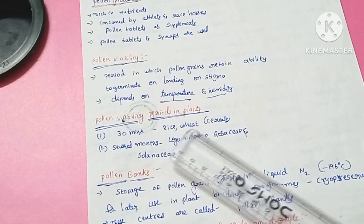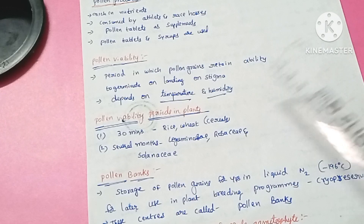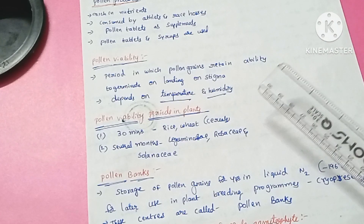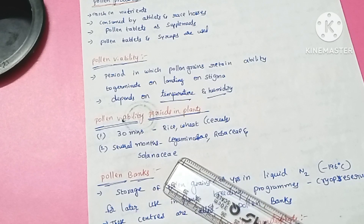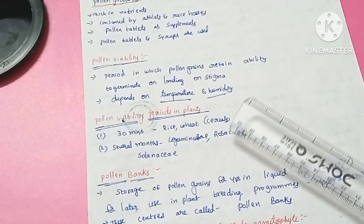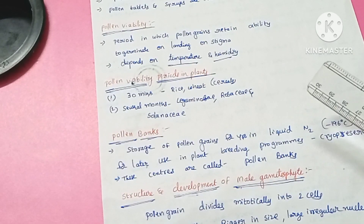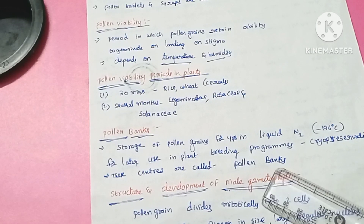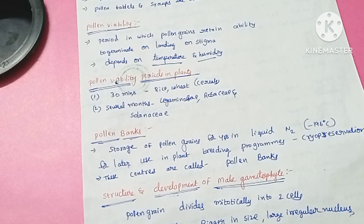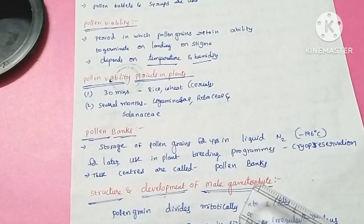In cereal plants like rice and wheat, pollen grains are viable for only about 30 minutes. In some other plants like Leguminaceae, Rosaceae, and Solanaceae, viability may differ. In plant breeding techniques, pollen grains are stored in liquid nitrogen at minus 196 degrees centigrade, which is called cryopreservation, preserving them in a frozen condition.